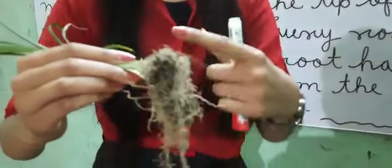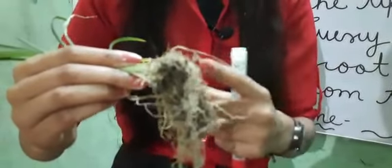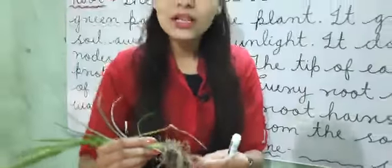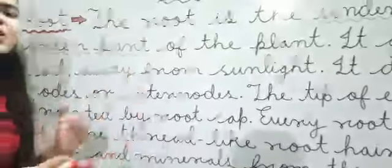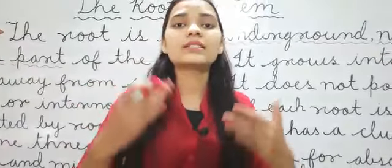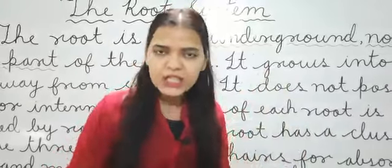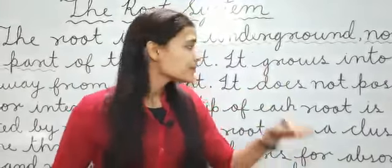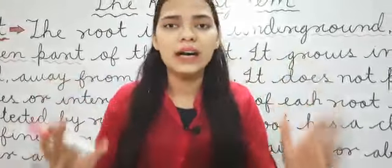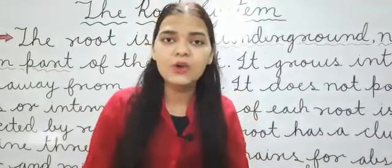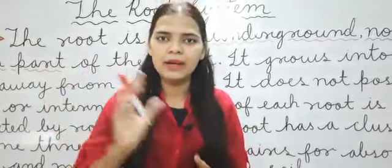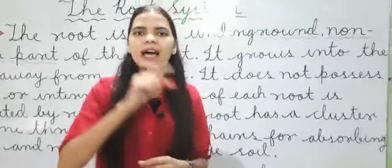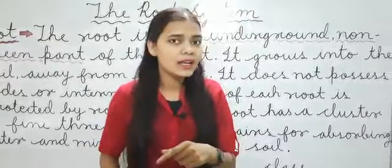Jo pata chal raha hai, is pe soil lagi bhi hai poori — yeh soil ko pakde hue hai. Toh isse pata chalta hai, yeh underground hai aur yeh non-green part hai plant ka. It grows into the soil, away from sunlight. Yeh soil mein grow karta hai, it grows towards the soil. Yeh soil mein neeche ki or badhta hai aur away hota hai from sunlight. Root pe koi sunlight nahi padti. Remember: it grows towards the soil and away from sunlight.